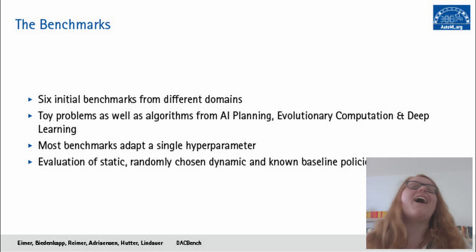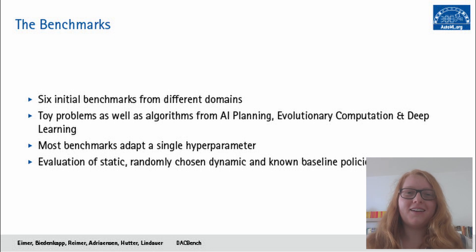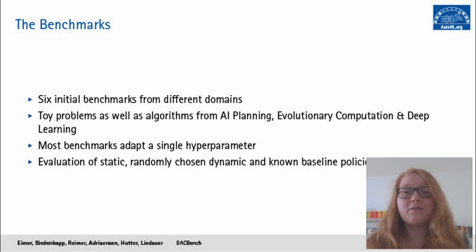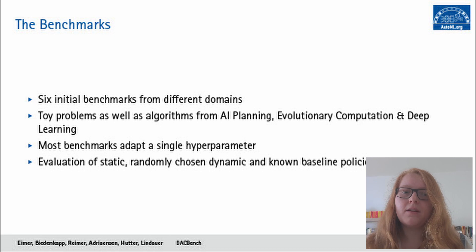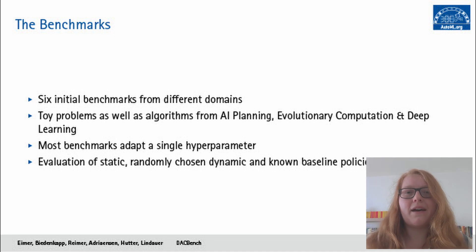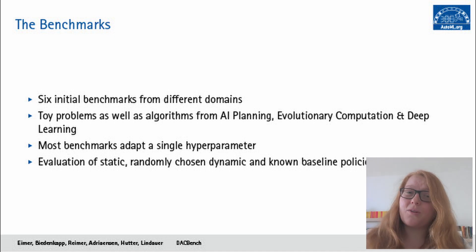The most interesting part are the benchmarks themselves. We chose six initial benchmarks for DuckBench: two toy benchmarks, a benchmark from AI planning, two from evolutionary computation, and one from the domain of deep learning. Most benchmarks are single hyperparameter benchmarks for now, so we really only adapt one hyperparameter at each step. To illustrate how optimal or baseline policies compare to static and random dynamic policies, we evaluated them over different seeds.